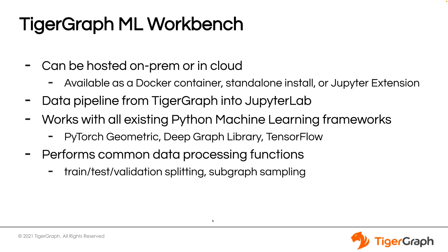So let's switch gears and talk about the TigerGraph Machine Learning Workbench itself. The Machine Learning Workbench is a framework for easy access to graph AI and machine learning models on top of TigerGraph. It can be hosted either on-prem or in the cloud — you can run it as a Docker image or install it as a standalone application on any server. It functions as a data pipeline to stream data out of your TigerGraph instance and into a Jupyter Lab environment for easy machine learning and Python integrations. It works with all existing Python machine learning frameworks — most notably PyTorch Geometric, Deep Graph Learning — and TensorFlow support is upcoming. It also performs common data processing functions such as training, validation, and testing splits, as well as several methods of subgraph sampling to more easily feed data into your machine learning model.